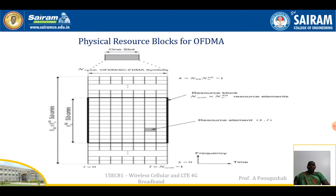Here, the smallest unit present in the resource grid is called the resource element, defined by the index pair K, L — where K is the number of subcarriers in the resource block and L is the number of symbols in the resource block. Totally, in the resource grid you are going to have a number of resource blocks.